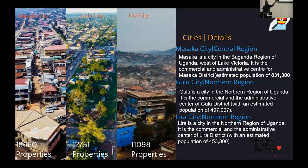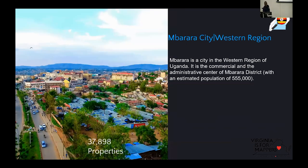In Masaka City, we collected about 18,660 properties. With these projects, I will be talking about two major things: properties and buildings. A property can have many buildings in it, so there are more buildings than properties — I'll explain as we go along. This was Gulu and Lira City. Masaka City is in the central region, Gulu and Lira are in the north. Mbalara is one of the next big cities after Kampala, and it has the most properties we collected in this project.